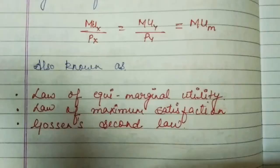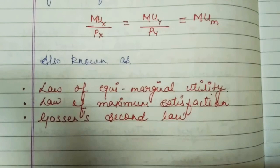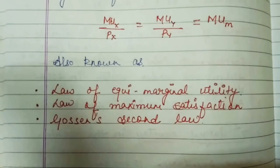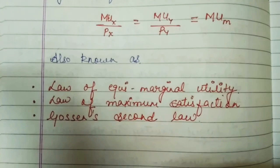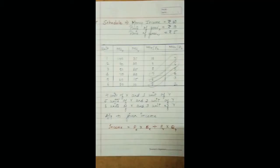Consumer equilibrium in case of two commodities is also known by a few different names: the Law of Equi-Marginal Utility, the Law of Maximum Satisfaction, and Gossen's Second Law. All three refer to consumer equilibrium in case of two commodities. It can be asked by any one of these names, so students, just remember them.